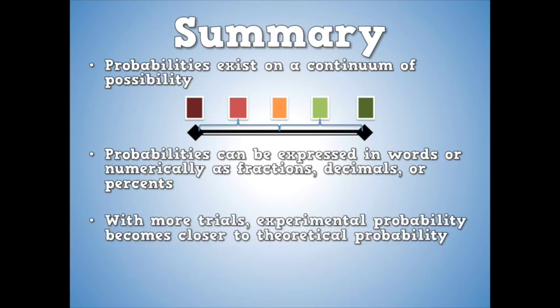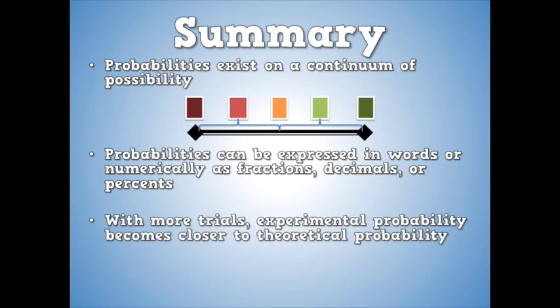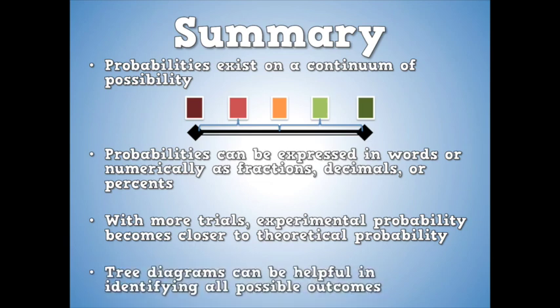With more trials, experimental probability becomes closer to theoretical probability. If you predict that you will flip heads half the time, you're more likely to be closer to that 50% of the time the more trials you do. So if you do 10 trials, you will be closer to theoretical probability if you did 100 trials. So you'll be closer to 50% if you did it that way. And then finally, tree diagrams can be helpful in identifying all possible outcomes of a probability experiment.